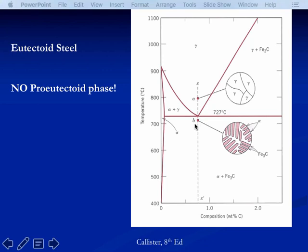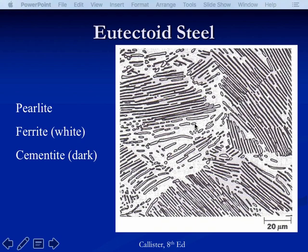Here's the micrograph of eutectoid steel. Pearlite follows the grain boundaries of the austenite. Each austenite grain is broken up into cementite lamellae, and the white matrix is ferrite.